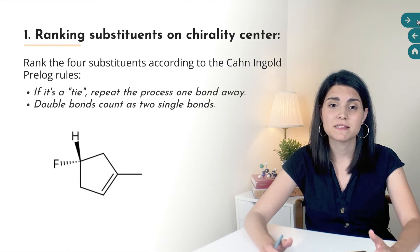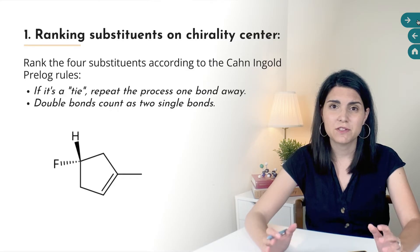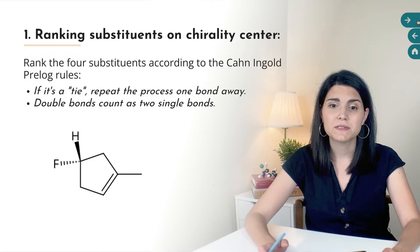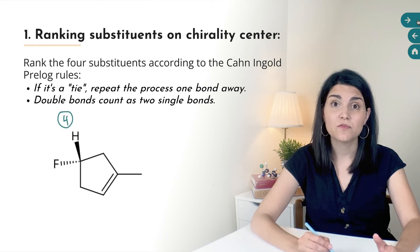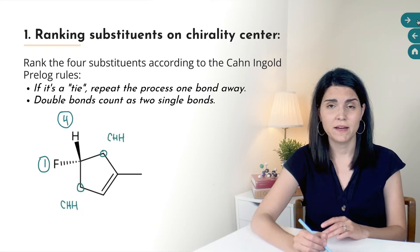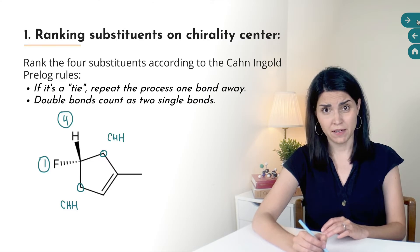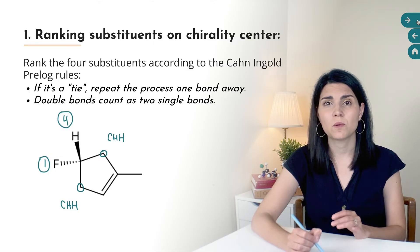If you still don't have a winner after applying that rule, you repeat the process one bond away. In this ring with one chirality center, the four substituents are hydrogen, a fluorine, and the two ring carbon atoms. Because the ring is asymmetrical, those carbons are considered different groups. Hydrogen ranks four and fluorine ranks one. The two carbon atoms we're comparing are both connected to C, H, H — so our two lists are the same, meaning we have to move down one more bond.